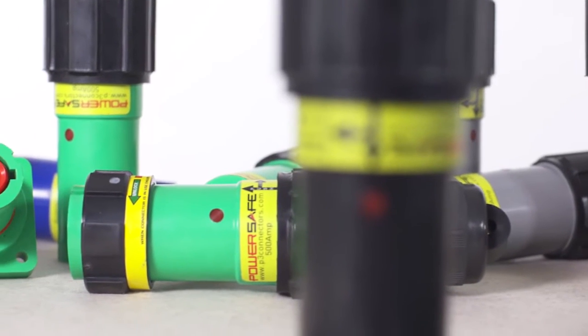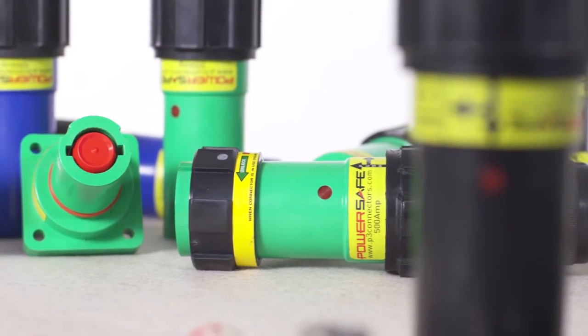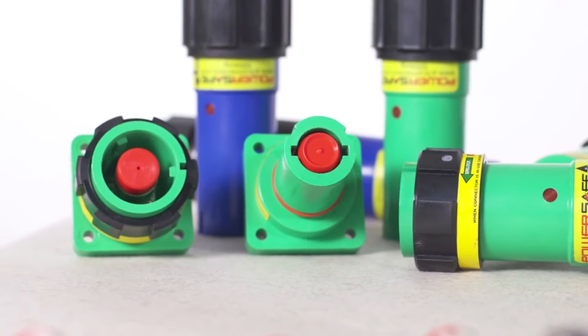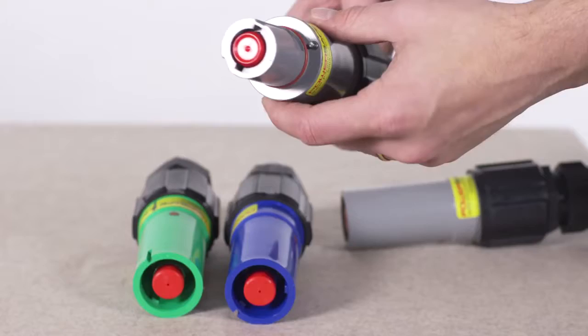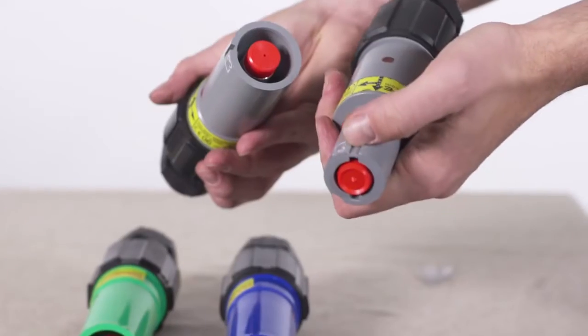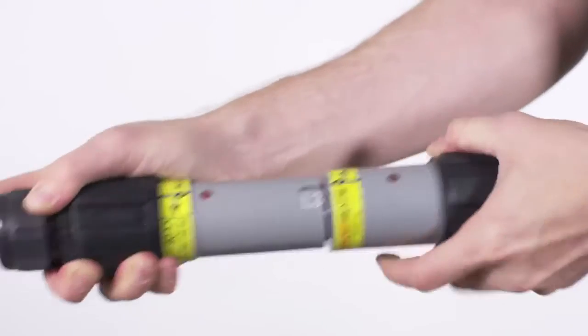The PowerSafe connector has safety features that help to protect the user against potentially fatal electric shock and other dangers as a result of connection errors. Such features include finger-proof electrical contacts, color-coded insulators, mechanical keys and locking devices.